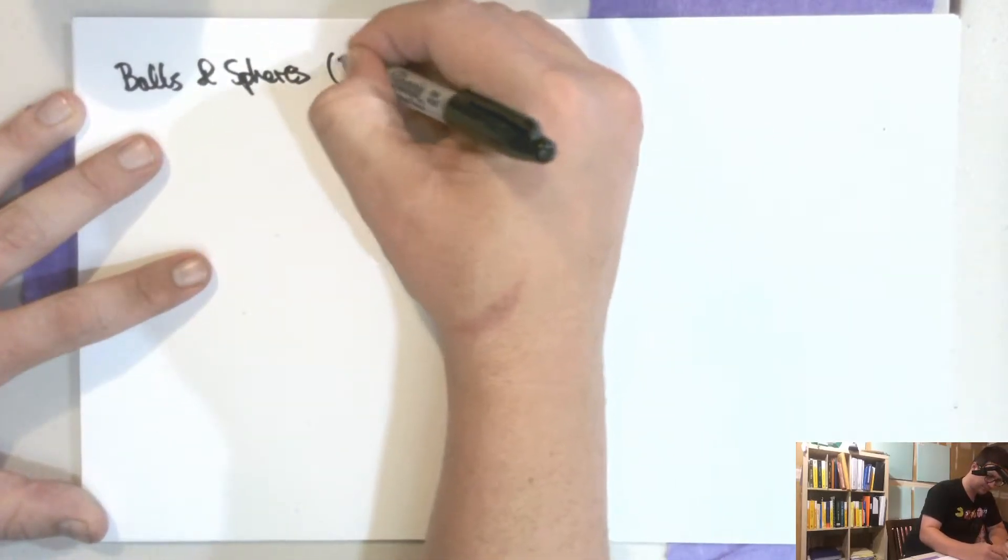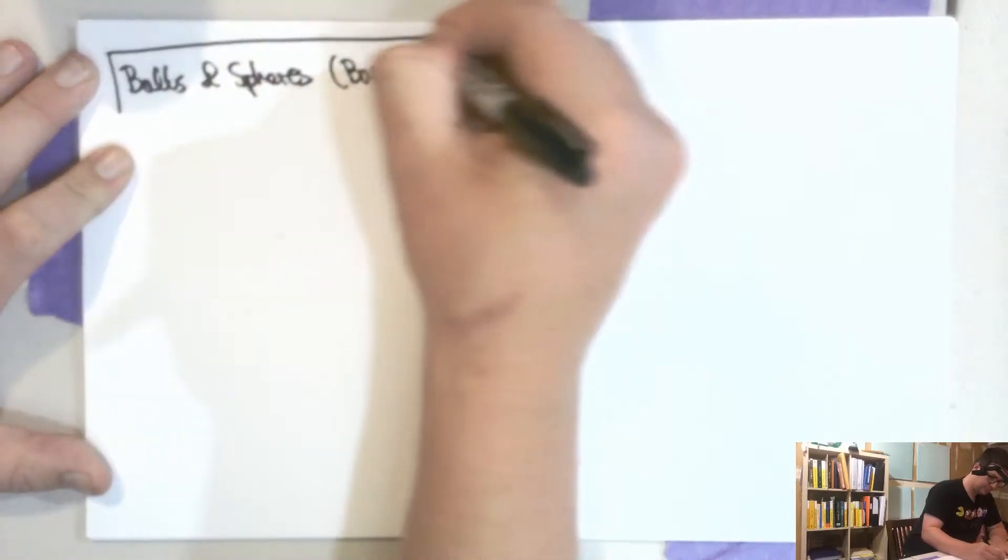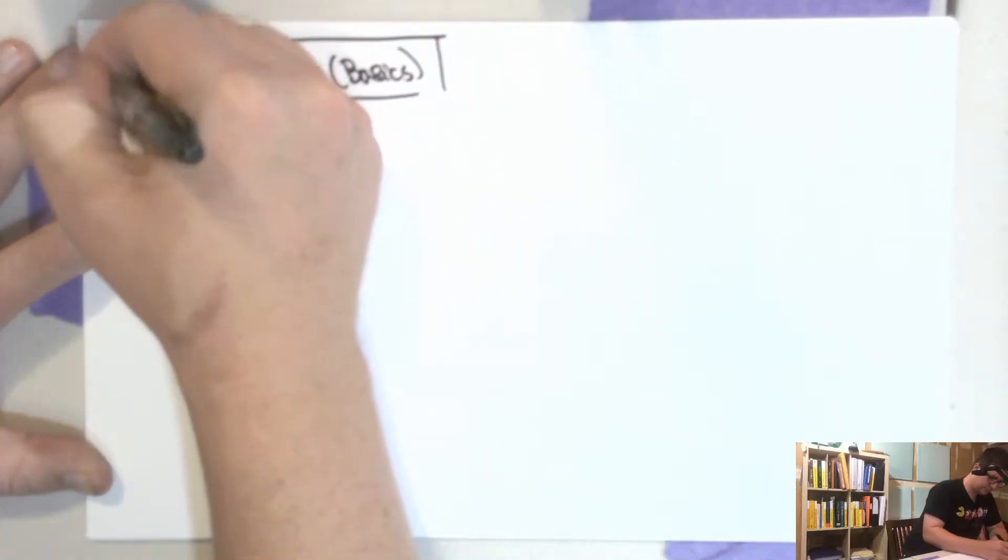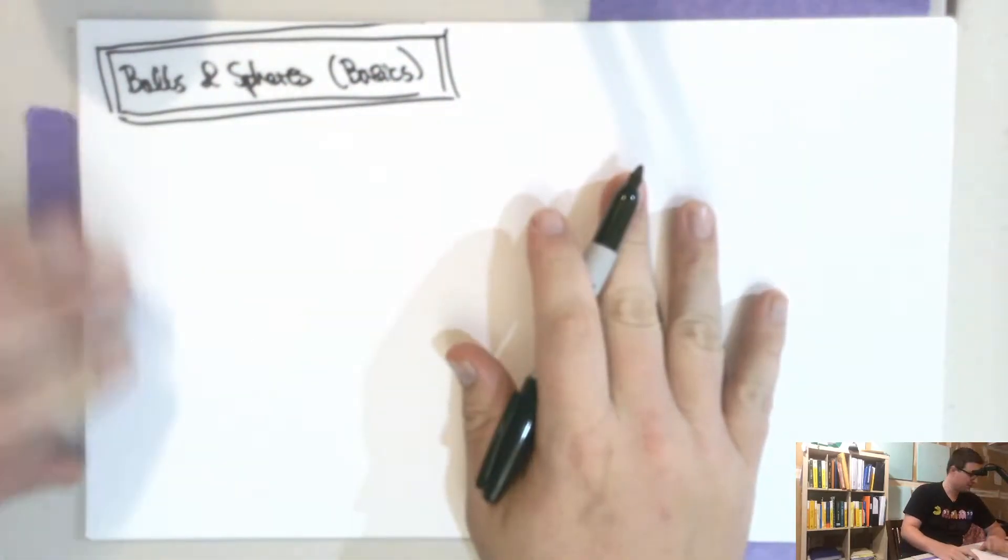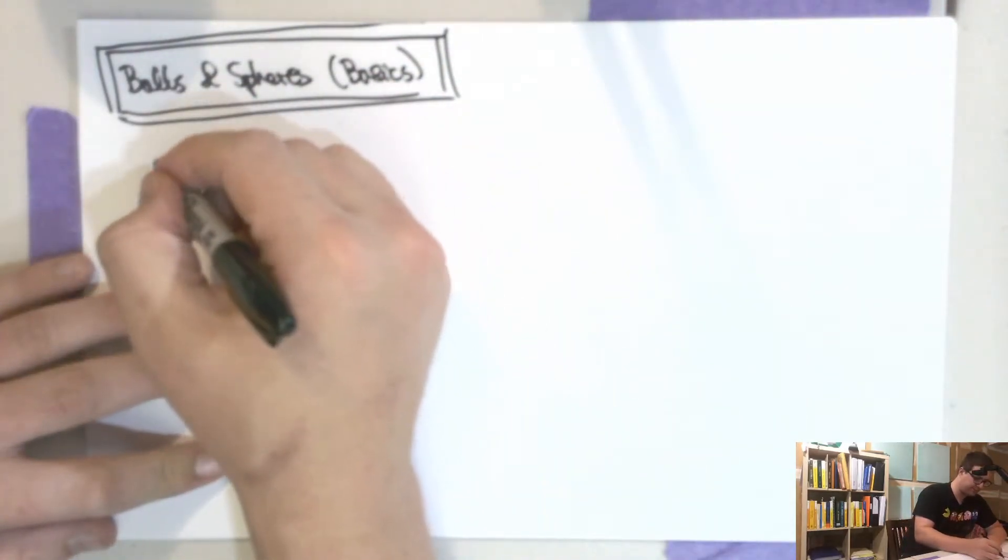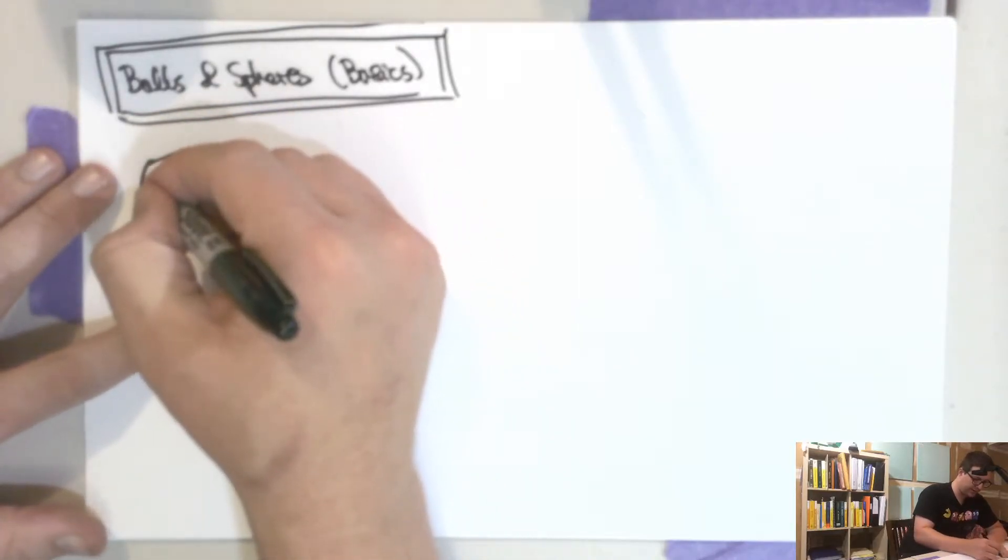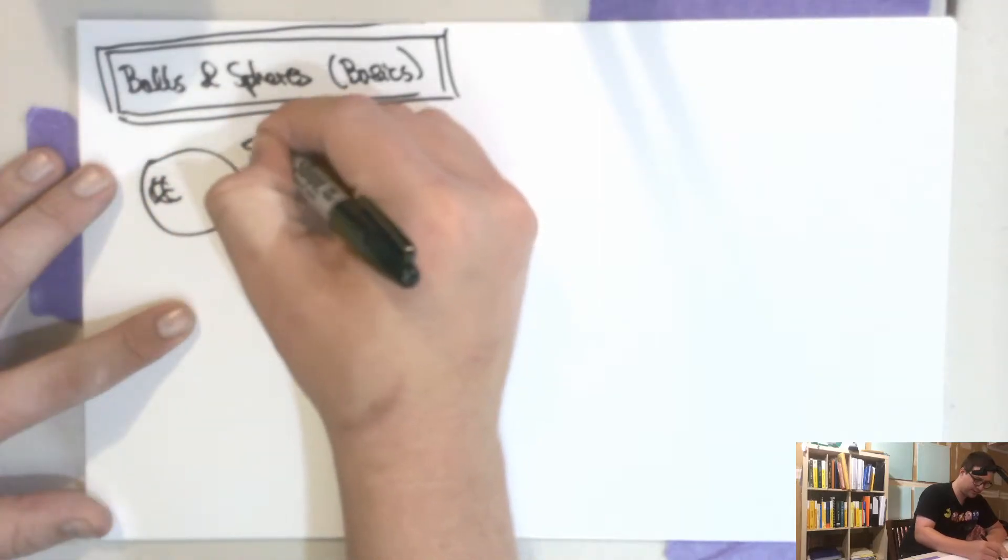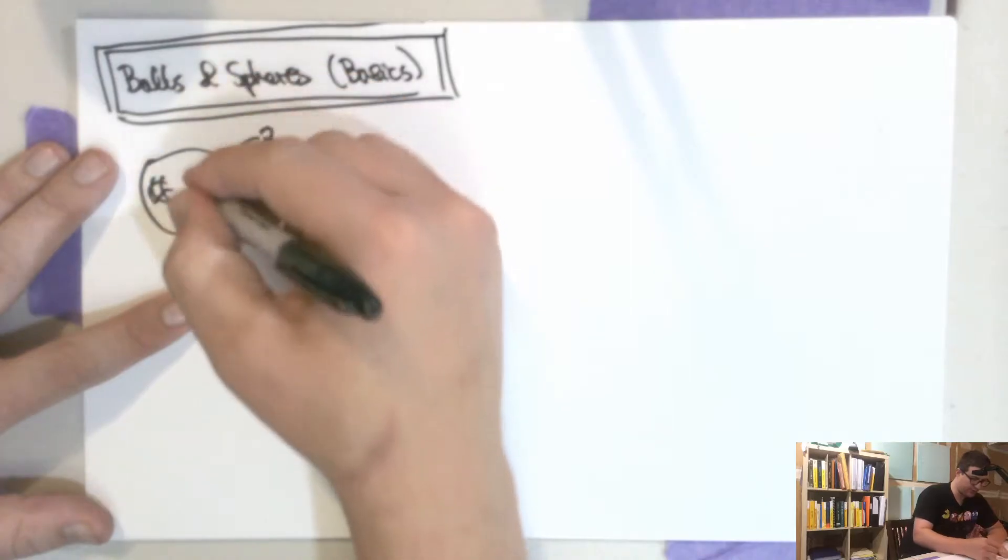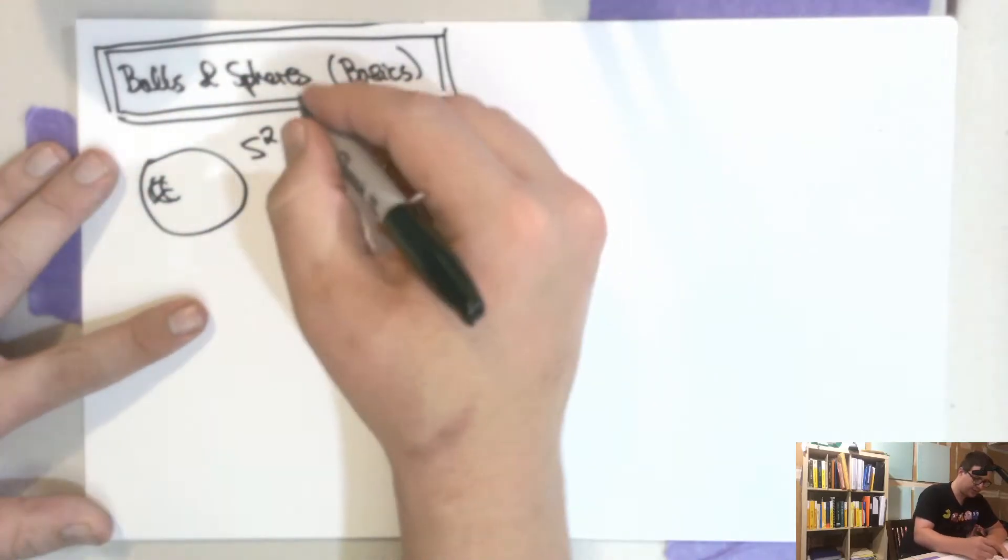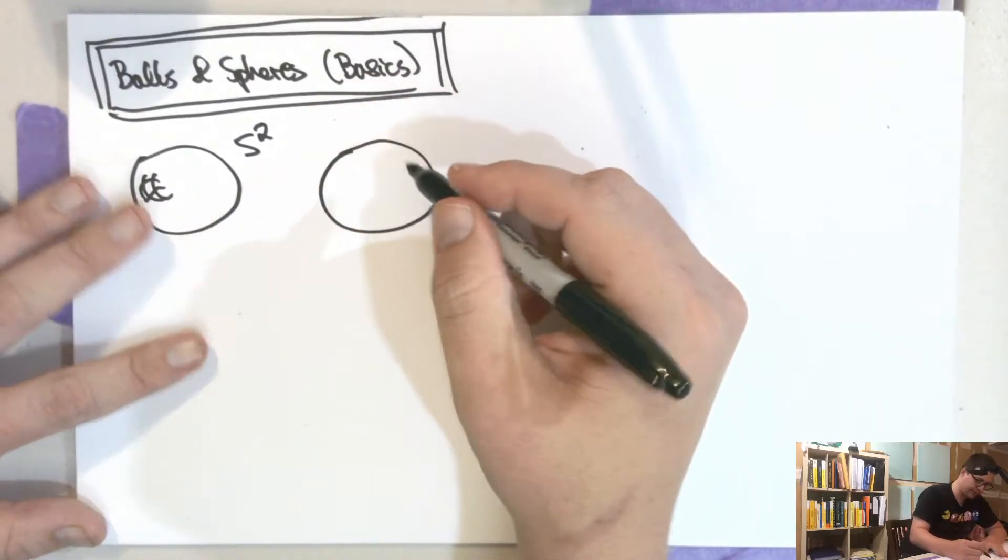The basics. So what's a ball? What's a sphere? So a ball is, so this is the sphere S2. It's two-dimensional because you can move. So this is the boundary here. And then the ball is the closed.